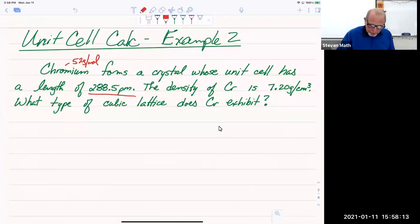We can get from picometers to centimeters. And why do we need to get to centimeters? Because our density is going to be given to us in grams per centimeter cubed. What the question's asking us is, what type of unit cell is this? It's a fancy way of coming around and saying, how many atoms are in this unit cell? Your choice is one, two, or four.